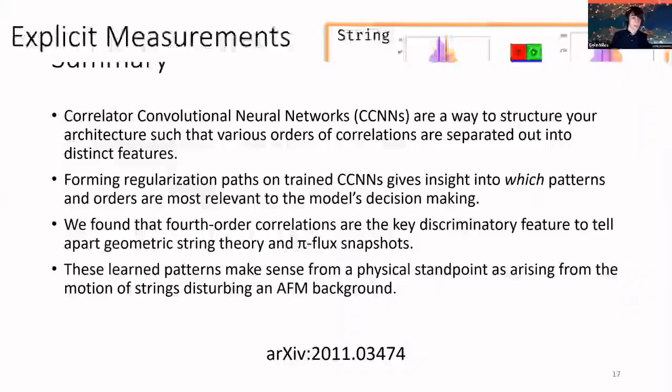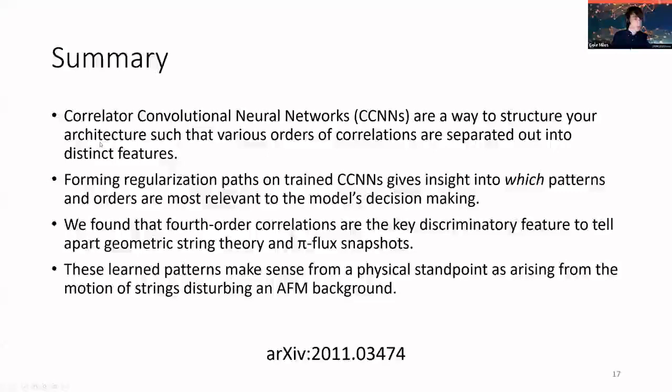In summary: structuring neural networks with certain nonlinearities allows you to understand features flowing through the network as measuring various orders of correlators. Regularization paths identify which features specifically give all the performance. For the Fermi-Hubbard problem, fourth-order correlations are the key discriminatory feature, and these patterns make physical sense — consistent with geometric string theory structures. Once spin-resolved quantum gas microscopy data is available, one can directly measure these correlators to determine whether experiment looks more like string or PyFlux theory.